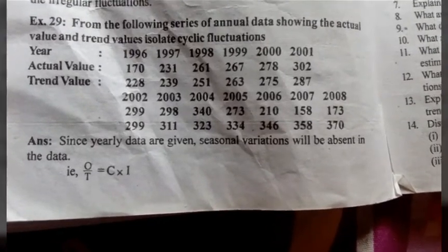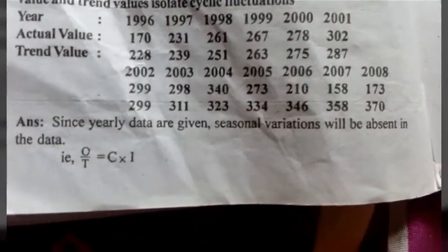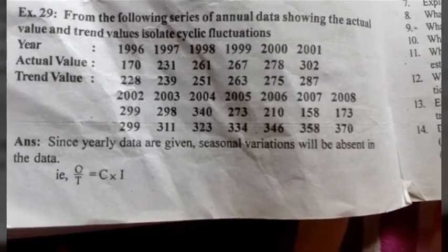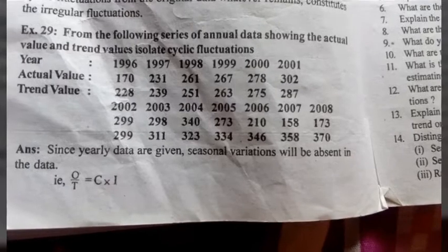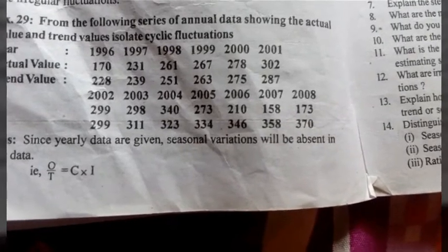We can isolate cyclic and irregular fluctuations using the formula: C × I = (actual value ÷ trend value) × 100. The observed actual value divided by the trend value, multiplied by 100, gives us the combined cyclic and irregular fluctuations.